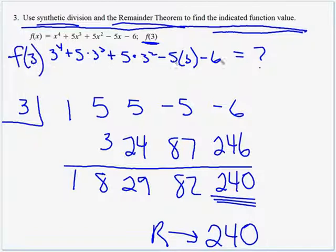Our remainder here is 240, and that's the same thing as f of 3. I plugged in all these 3s for my x's. Well, that's also going to be 240.